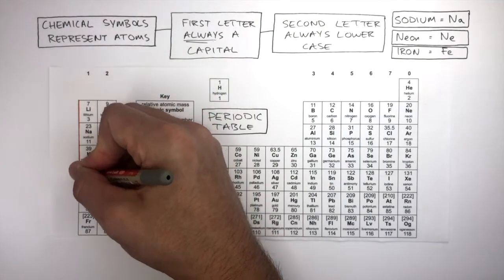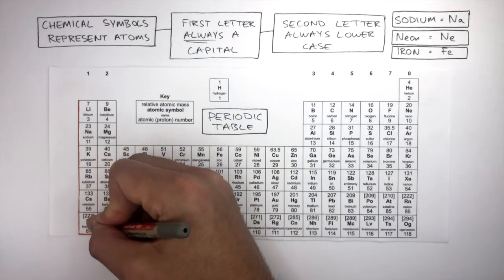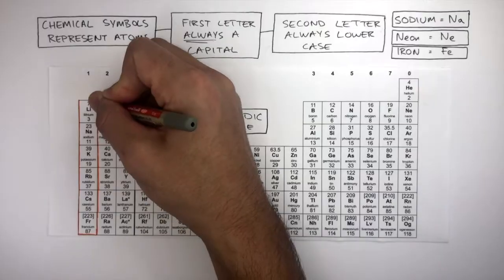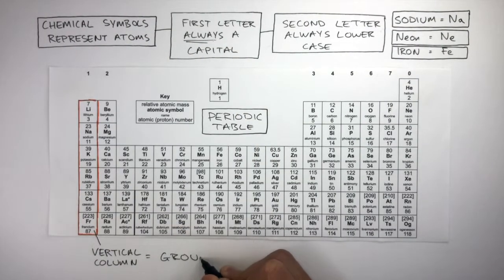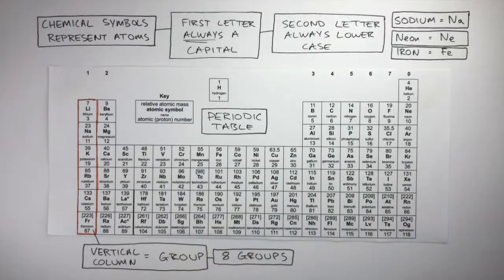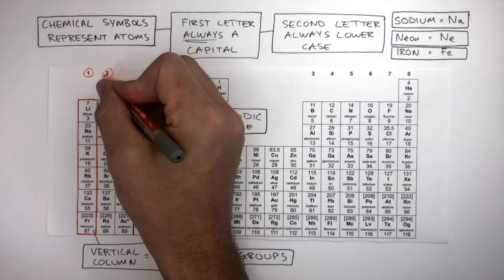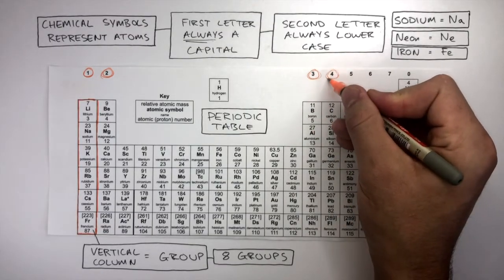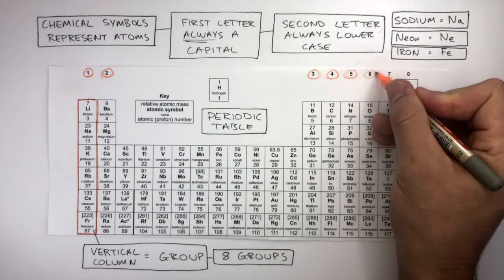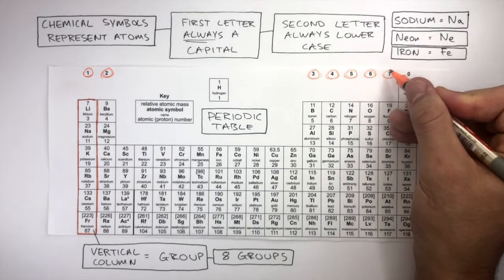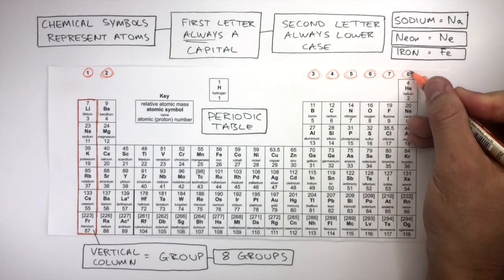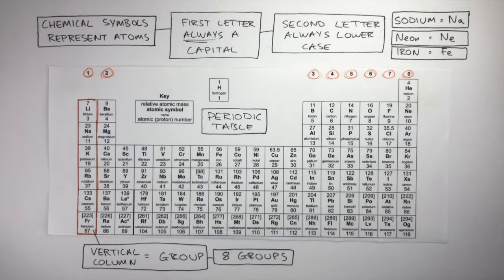Here I'm highlighting how the Periodic Table can be divided into groups. A vertical column is a group and there are eight groups in the Periodic Table. Group 1, group 2, group 3, group 4, group 5, group 6, group 7, and finally group 0. So to summarize, groups are vertical columns in the Periodic Table and there are eight groups, 1 to 7 and then 0.